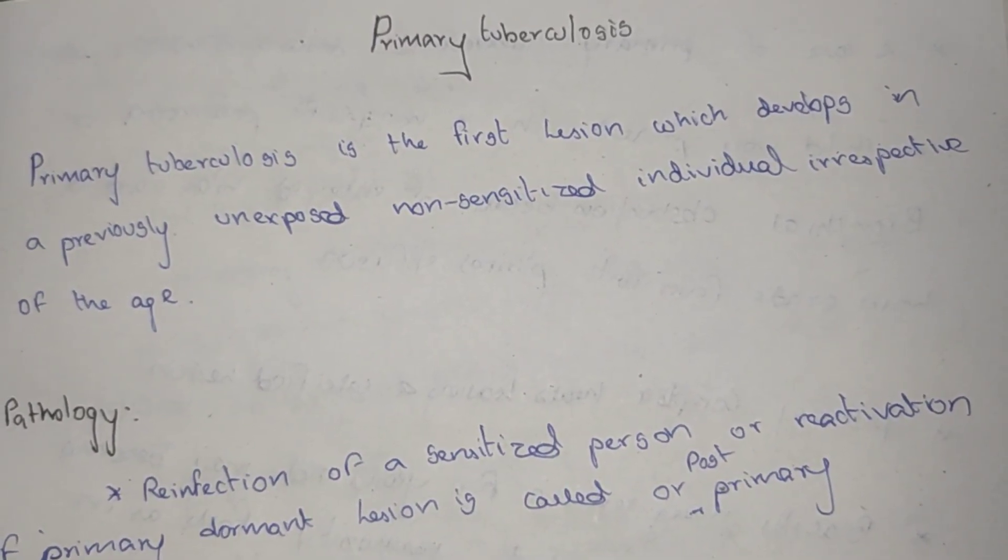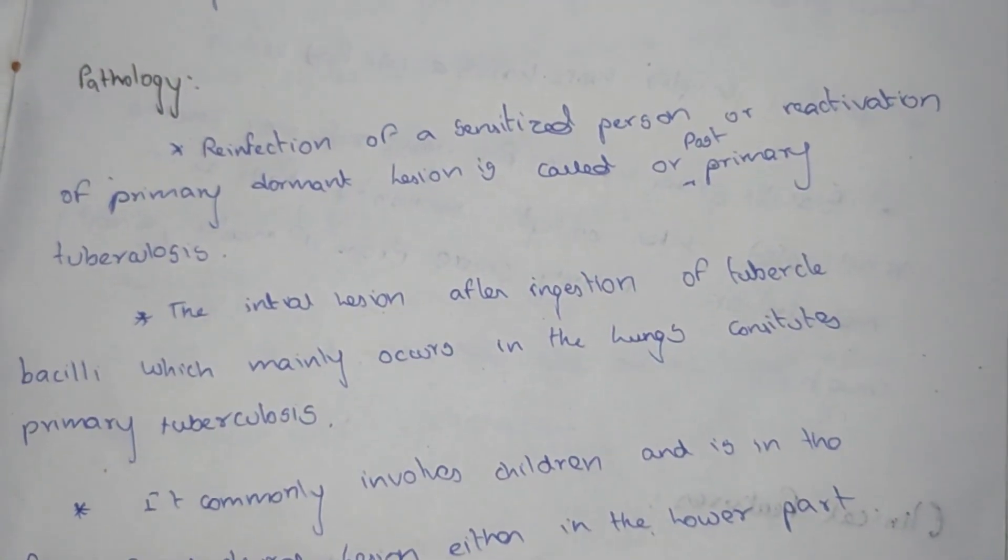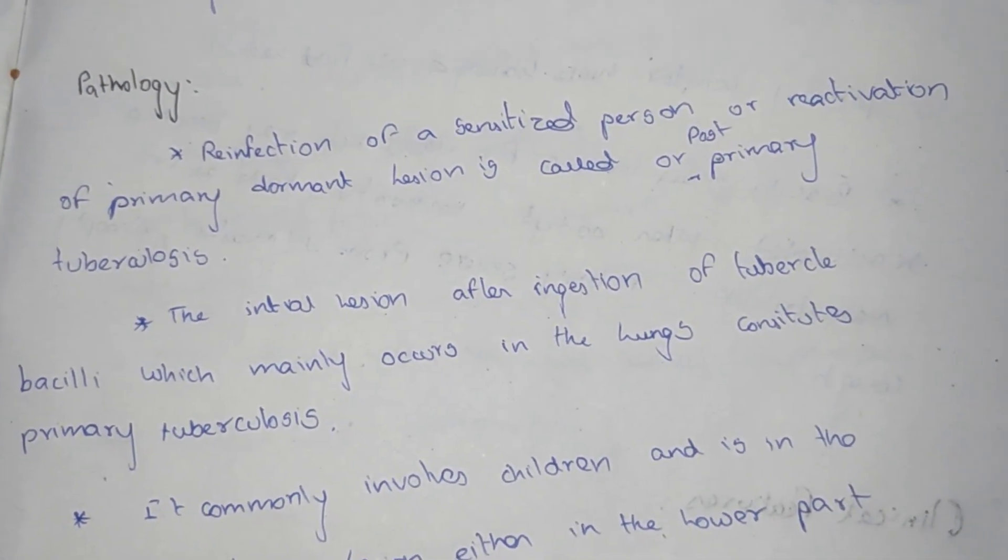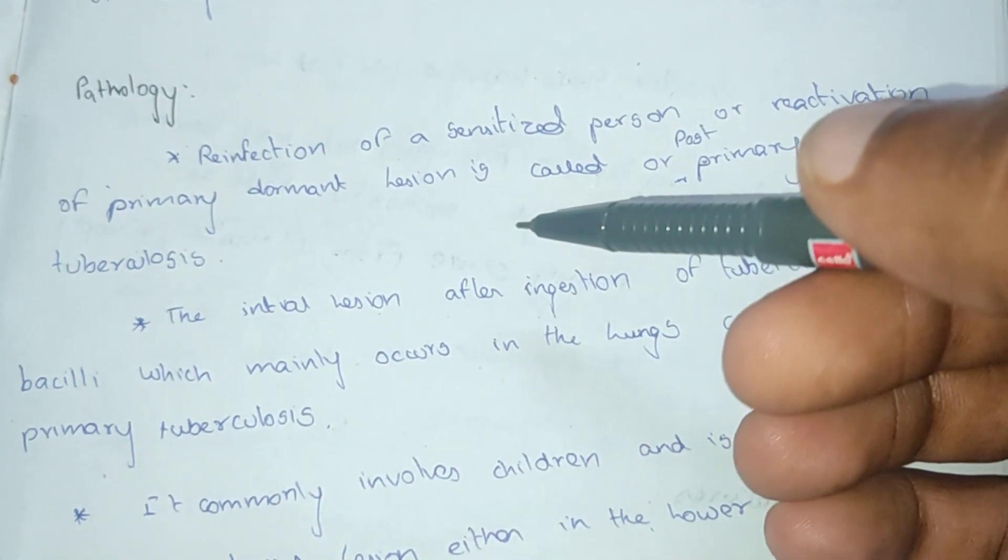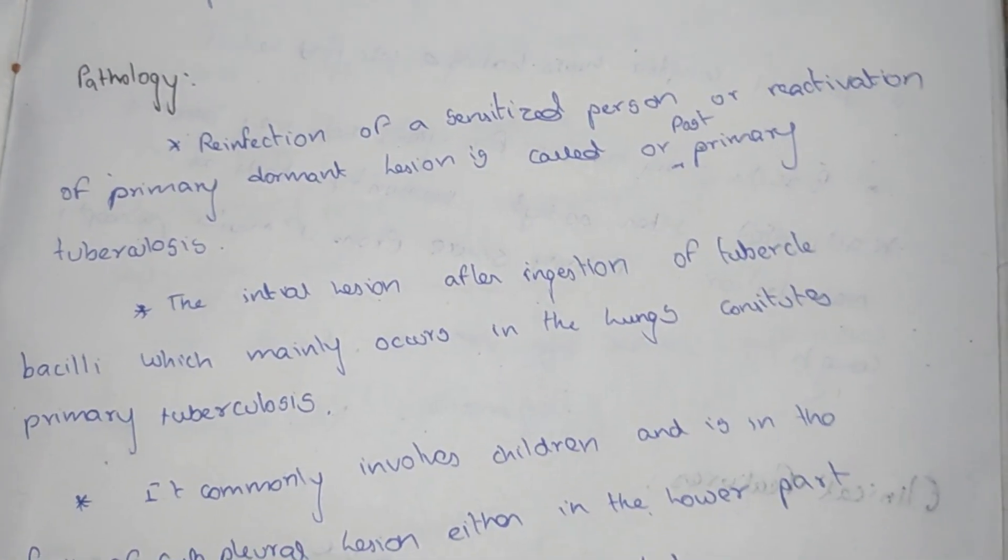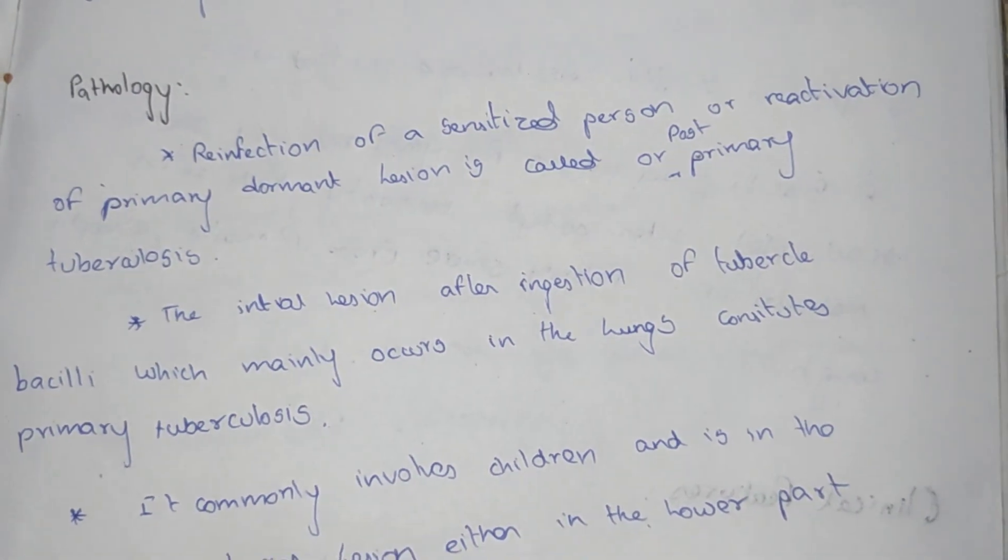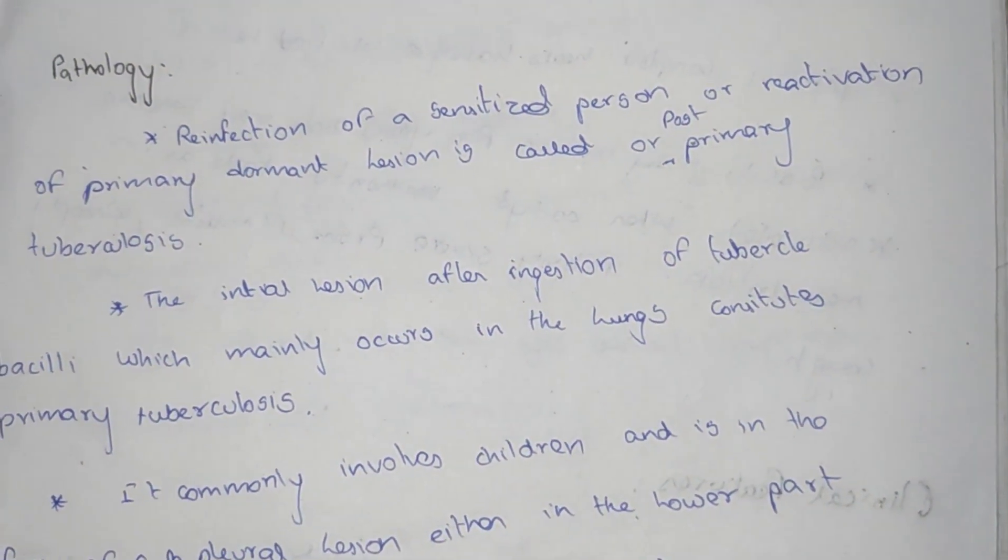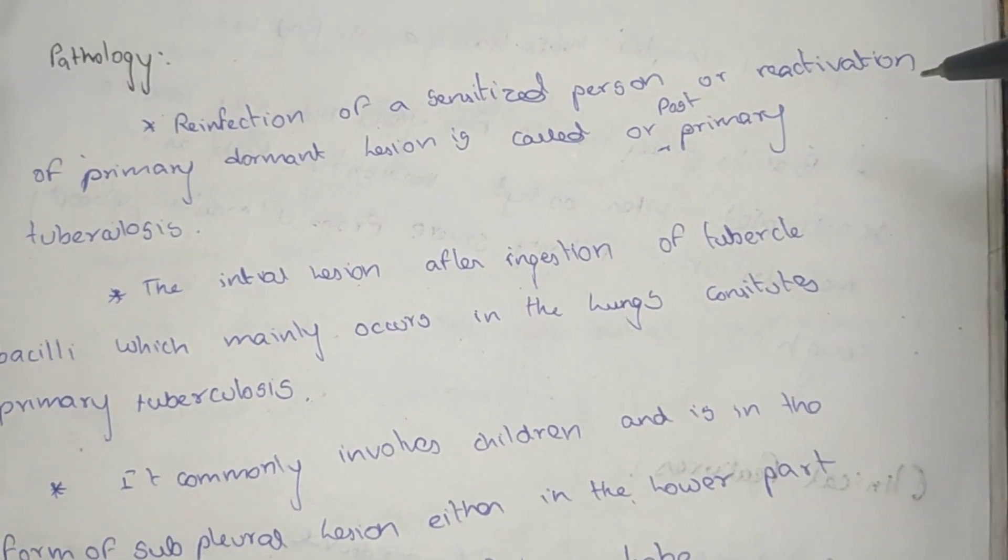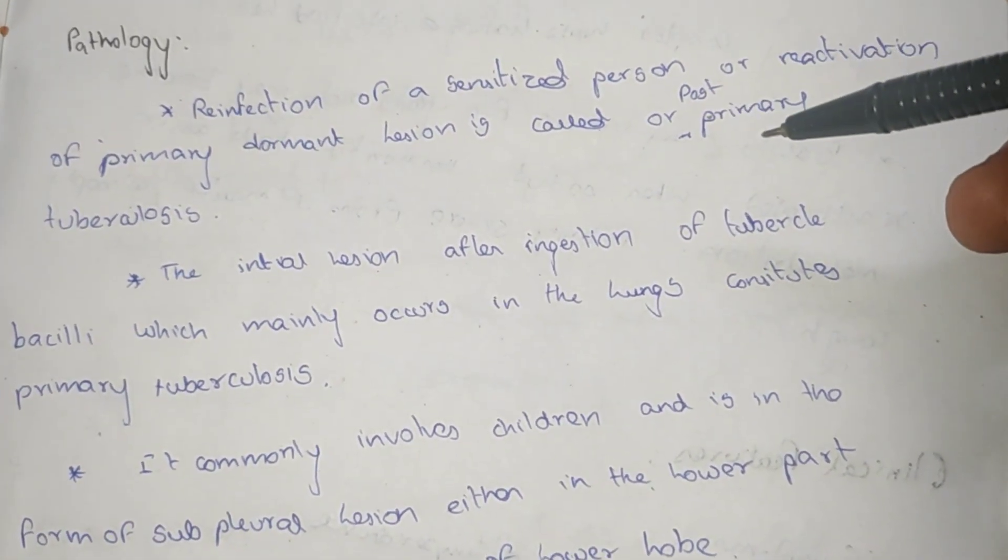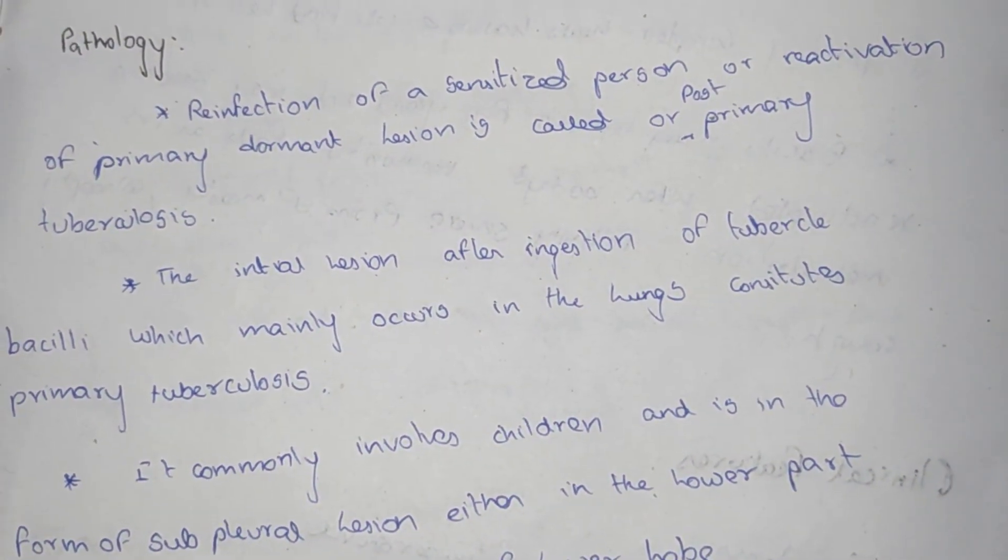Primary tuberculosis pathology: Reinfection of the sensitized person or reactivation of the primary dormant lesion is called post-primary tuberculosis.